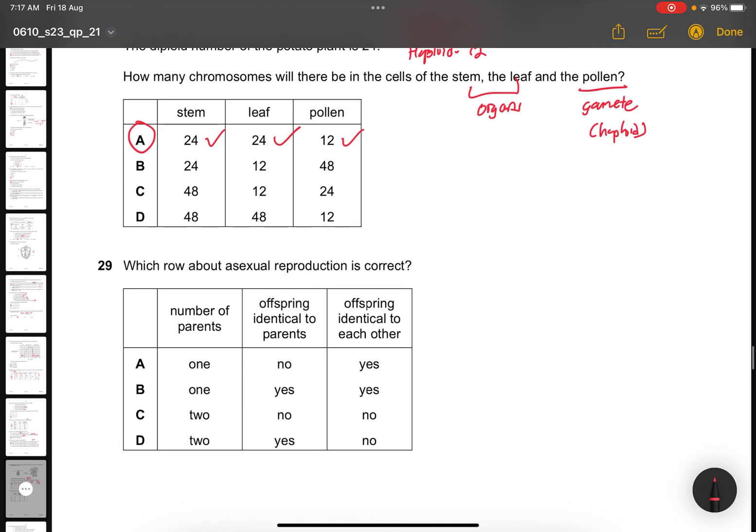Question 29. Which row about asexual reproduction is correct? Asexual reproduction is just within the plant itself. So it requires one parent. And this would be wrong. So these both will be wrong already. Offspring are identical to parent? Yes, it is. And it's identical to each other? No. This may be correct, but it's out. So the answer is only B. Question 29, the answer is B.